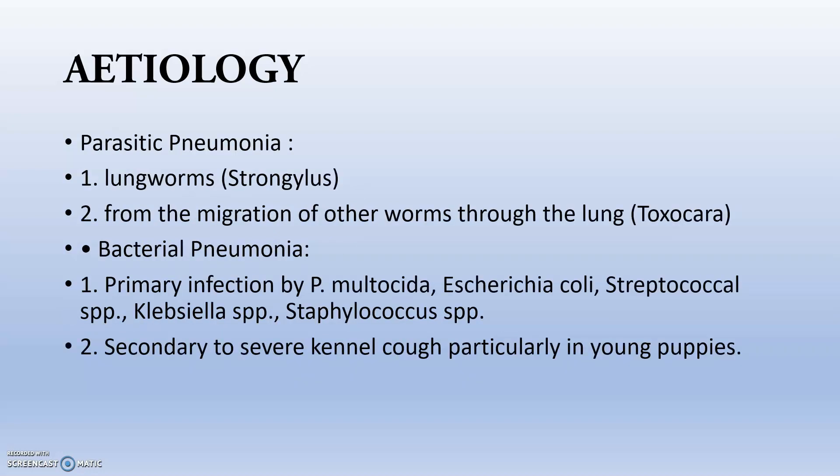Parasitic pneumonia is mainly caused by lung worms and Strongylus species. Migration of other worms, such as Toxocara species, through the lung via hepatic migration also produces what is known as verminous pneumonia.